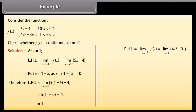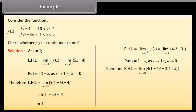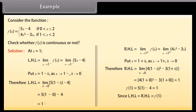Right-hand limit = limit as x approaches 1⁺ of f(x) = limit as x approaches 1⁺ of (4x³ − 3x). Put x = 1 + h; as x approaches 1⁺, h approaches 0. Therefore, right-hand limit = limit h approaches 0 of 4(1 + h)³ − 3(1 + h) = 4(1)³ − 3(1) = 1. Since left-hand limit = right-hand limit = f(1), therefore f(x) is continuous at x = 1.